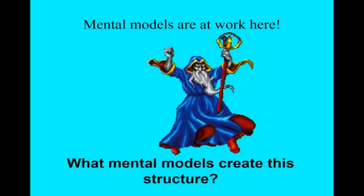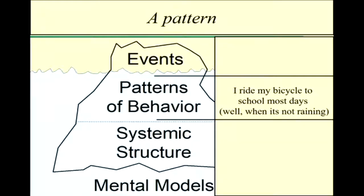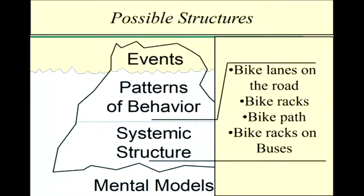We do an example here of using the iceberg. Again, the iceberg is an event, is I rode my bicycle to school today, which I didn't do today because it was raining, but I often do this time of the year. The pattern of behavior is I ride my bicycle to school most days when it's not raining. The structure is that allows this to happen is certainly the bicycle. The bicycle is a necessary structure. But the bike lanes, the bike paths, the bike racks, the lock that I use, bike racks on buses, these are all structures that we've put in place, suggesting make it easier for these patterns to exist.